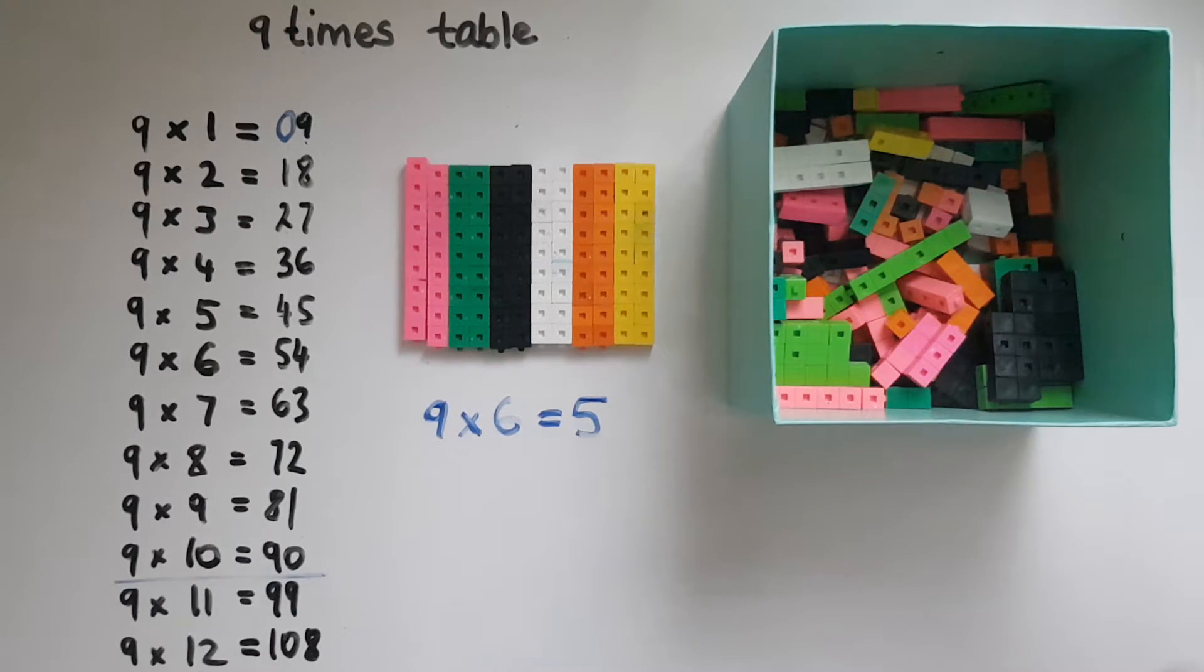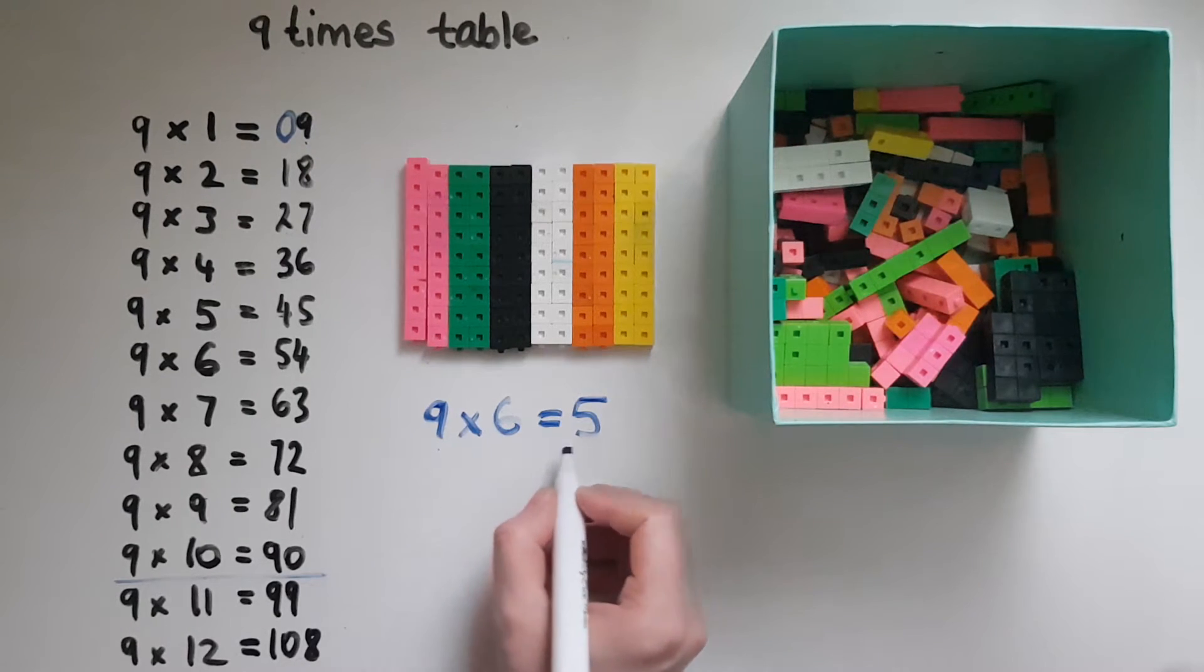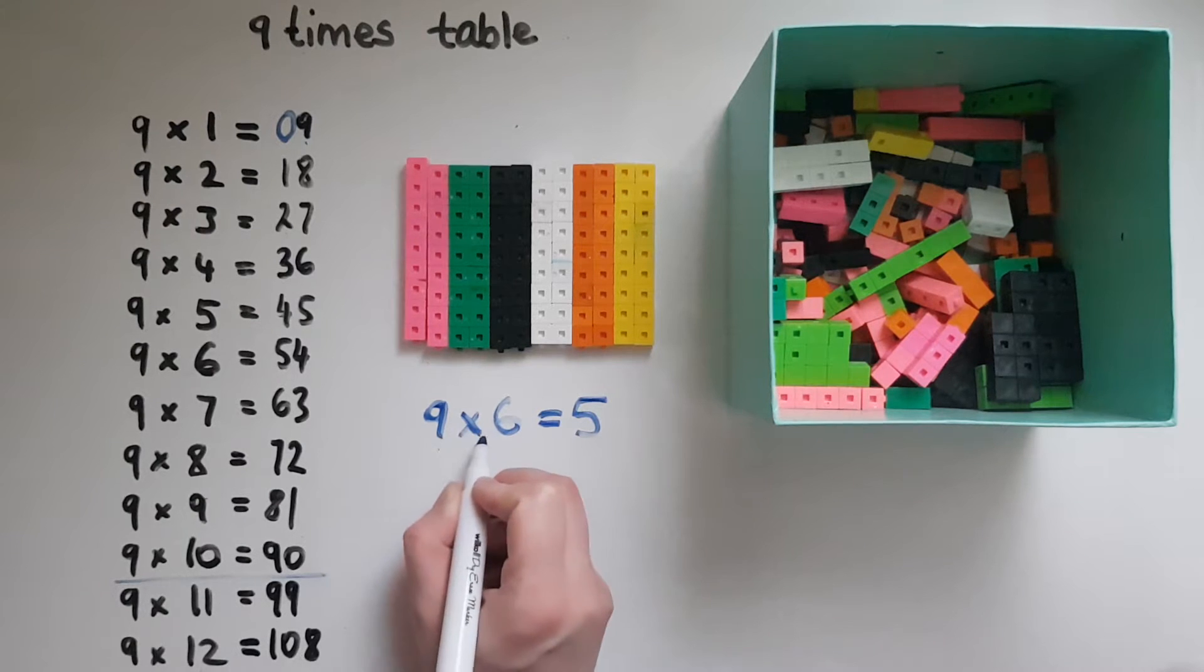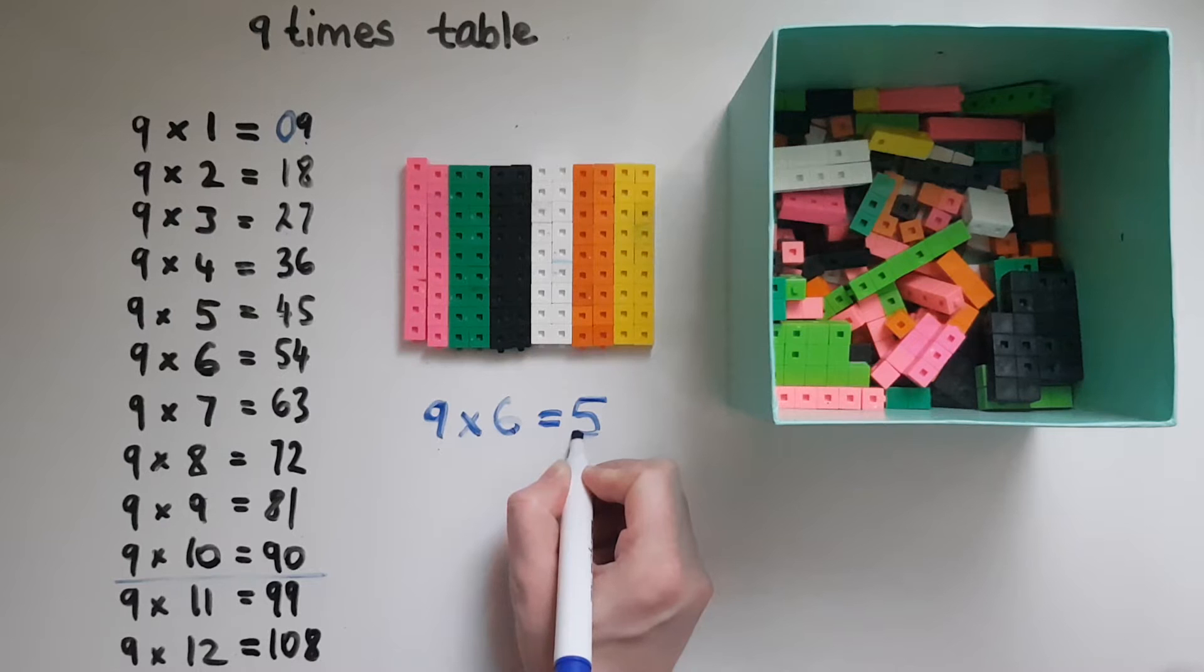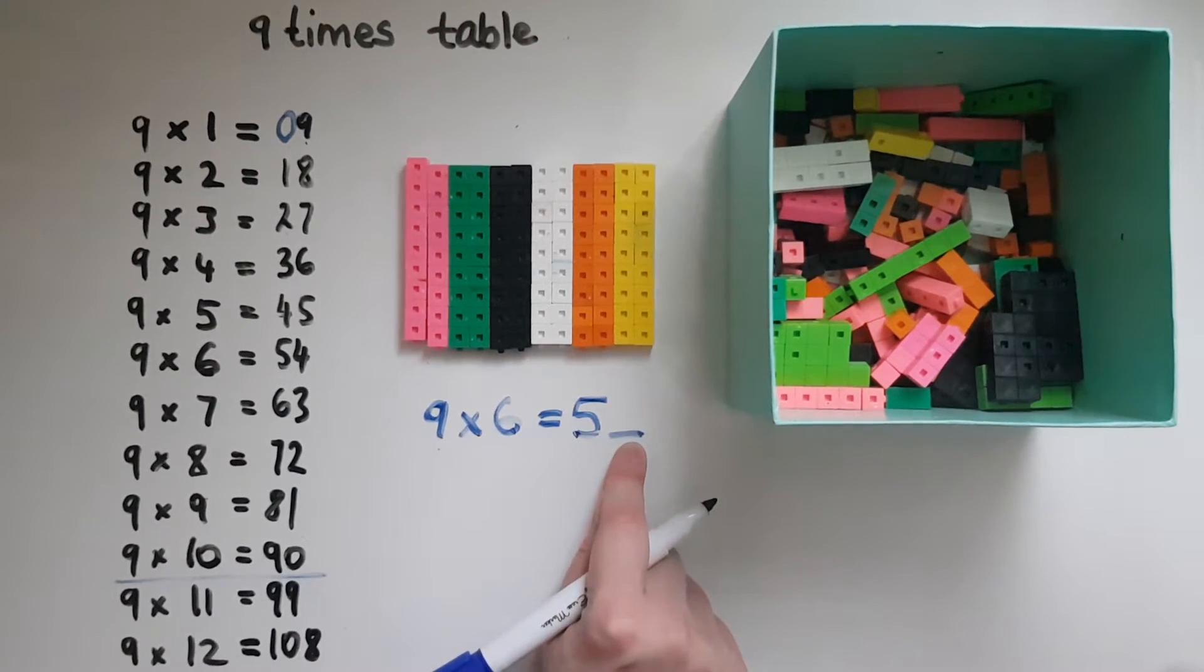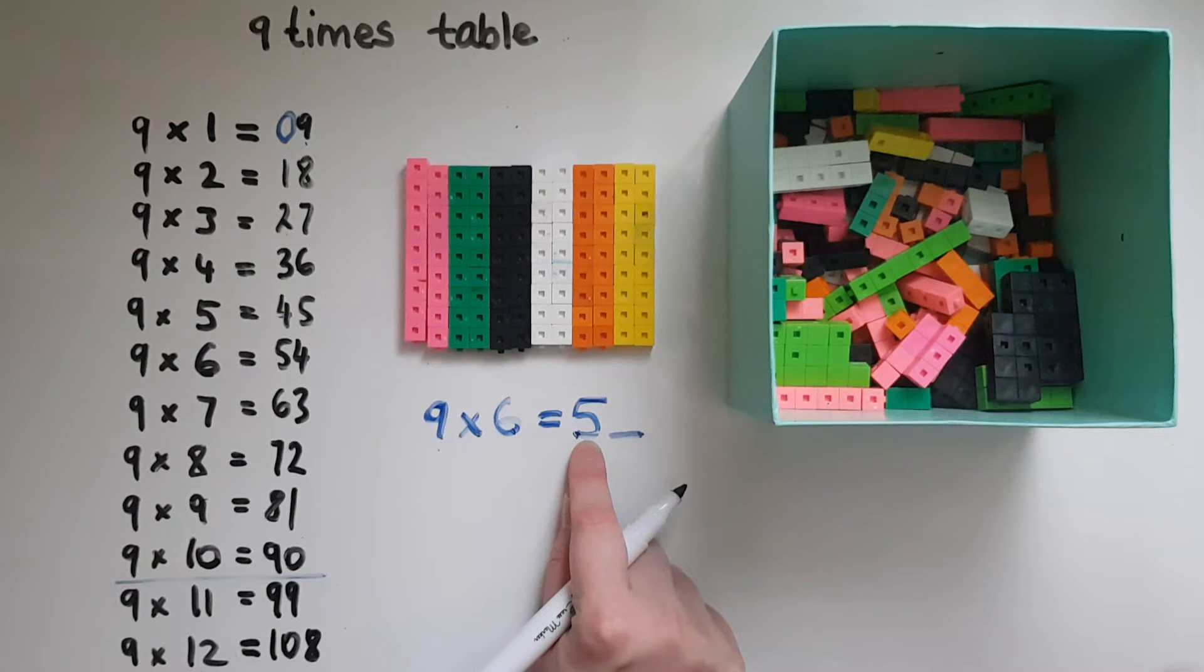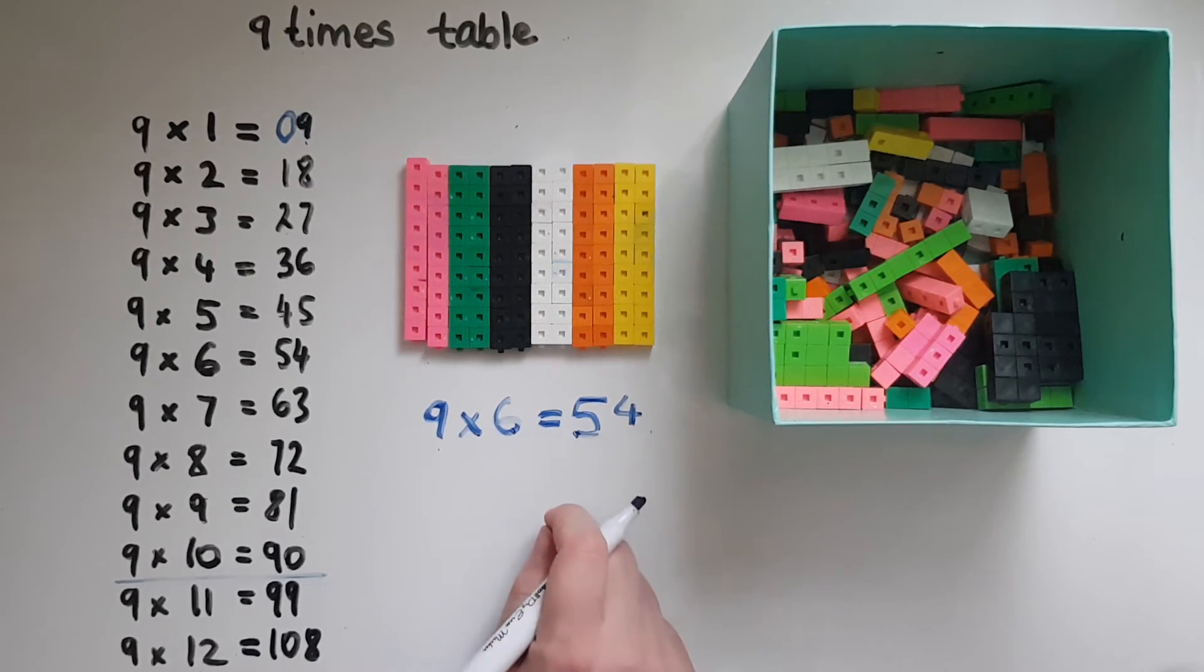So this helps us now. Going back to this multiplication sum, 9 times 6: we said it starts with 1 less, which is 5. So what is that other digit that I can add to 5 to give me 9? 5 and 4 make 9 together.